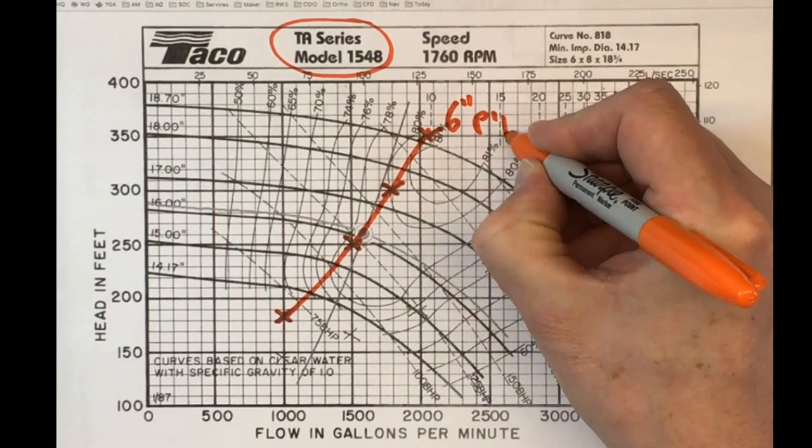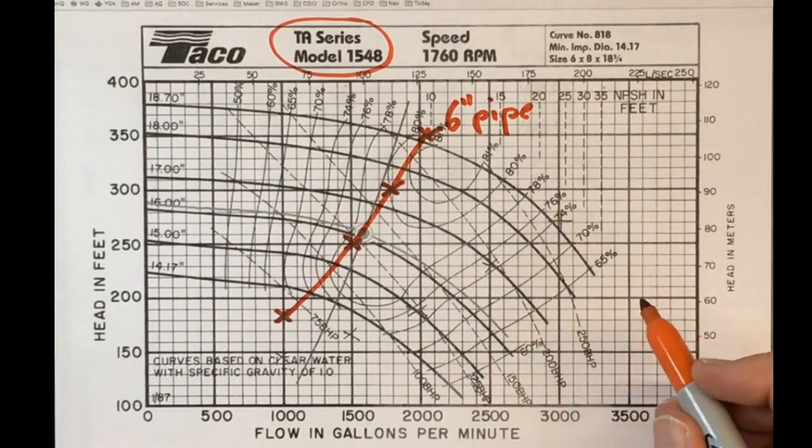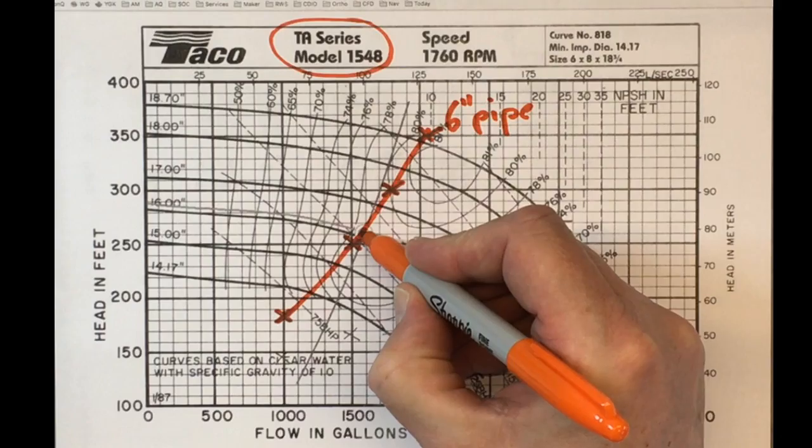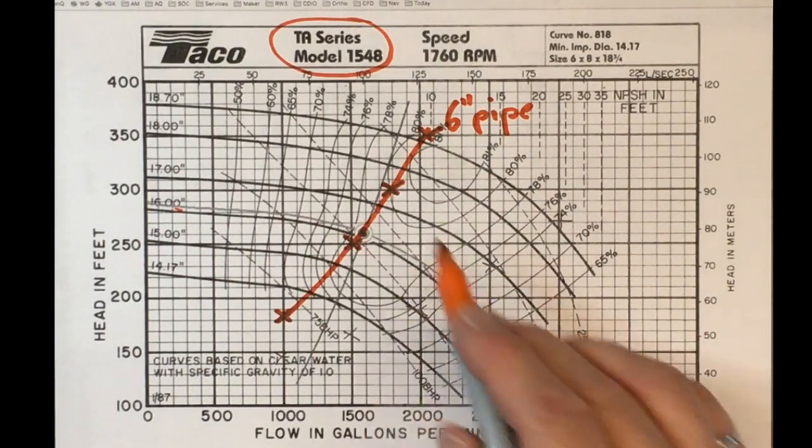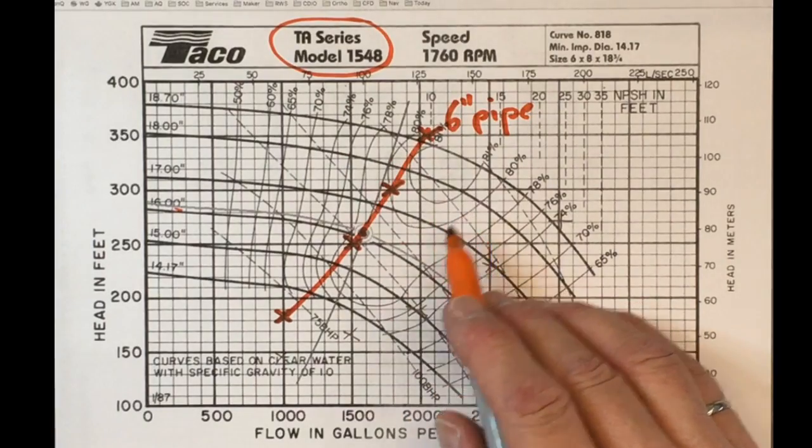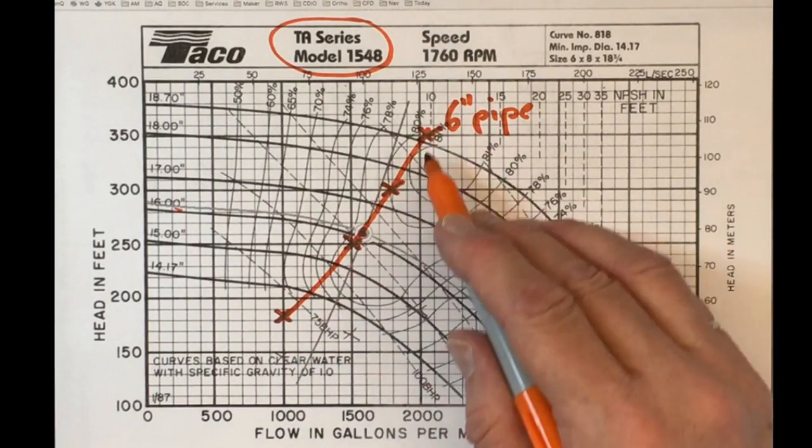So there's our 6-inch pipe solution, and it goes through this operating point for the 16.3-inch impeller that was the suggestion from the selection system. So that's encouraging. It's doing about the right thing.